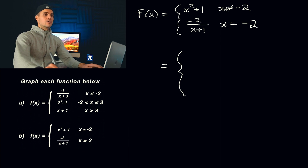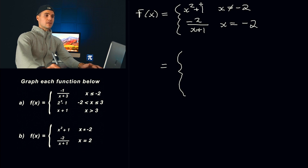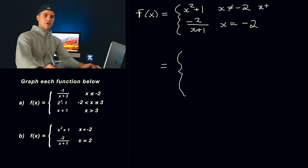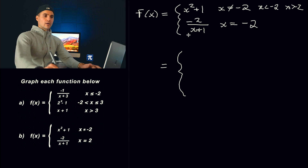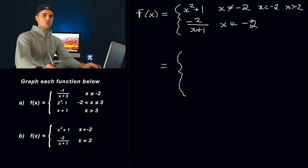Here, for x values not equal to negative two, the function is defined by x squared plus one. What are all the x values not equal to negative two? It's x values less than negative two or x values greater than negative two. And then for the x value equal to negative two, the y value is defined by that other function. If you ever see x is equal to just a single number in a piecewise function — not greater than or less than, just equal to a number — what this means is that it represents a single point.